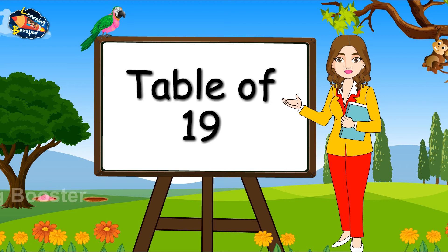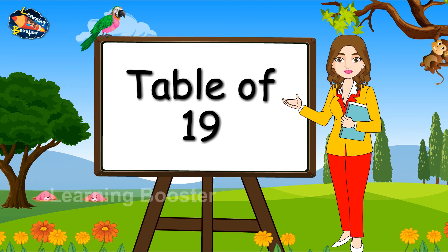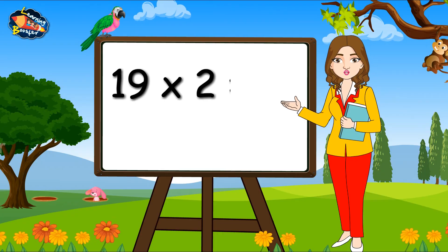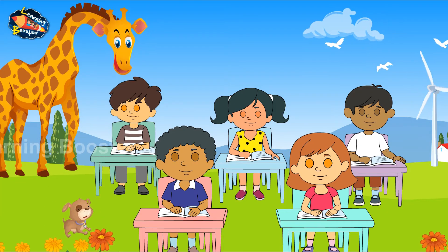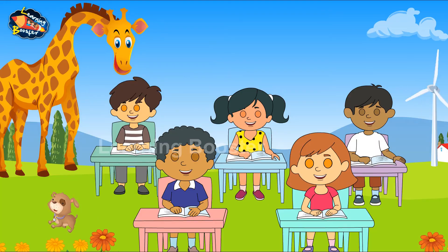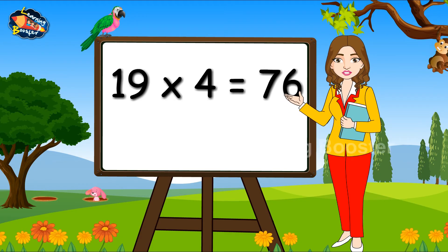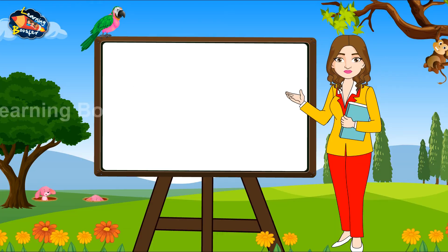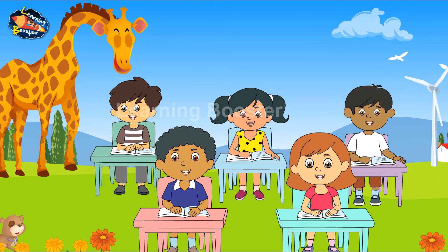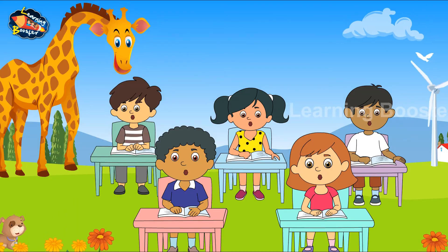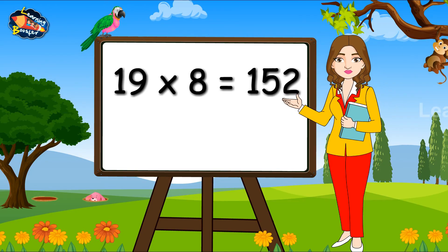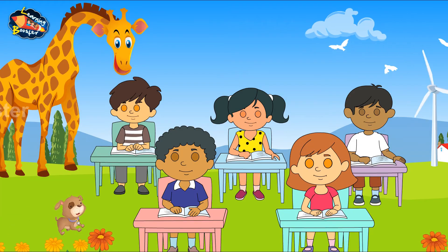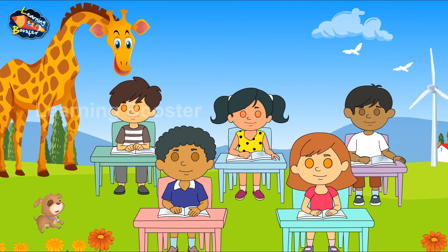Table of 19. 19 1s are 19. 19 2s are 38. 19 3s are 57. 19 4s are 76. 19 5s are 95. 19 6s are 114. 19 7s are 133. 19 8s are 152. 19 9s are 171. 19 10s are 190.